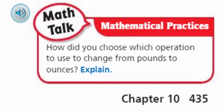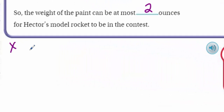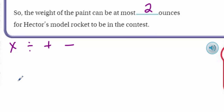How did you choose which operation to use to change from pounds to ounces? We only have four operations: multiply, divide, addition, and subtraction. Since we had a larger unit — whenever we go from a larger unit to a smaller unit, we're going to need to multiply. Since ounces are smaller than pounds, I needed more of the ounces, and there are 16 ounces in every pound. That's how I knew I would need to multiply by 16, not divide.